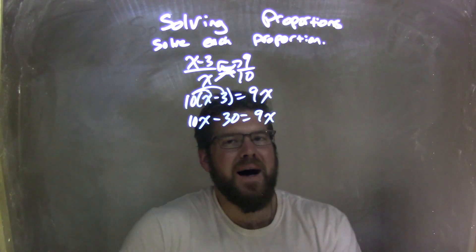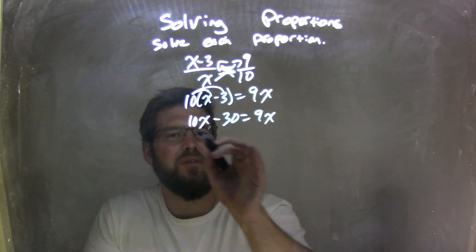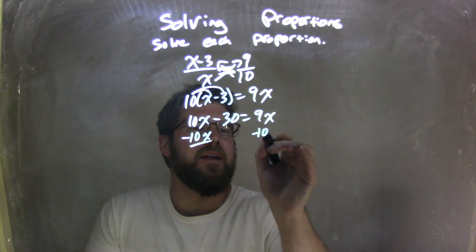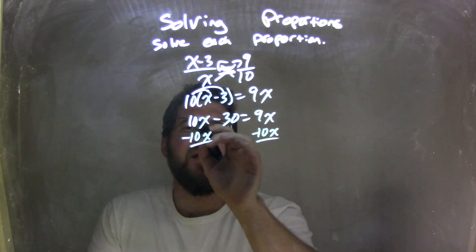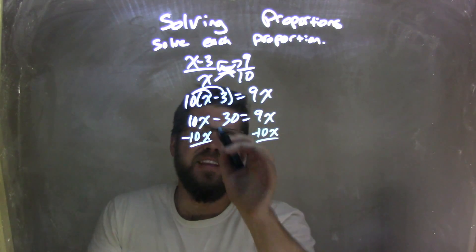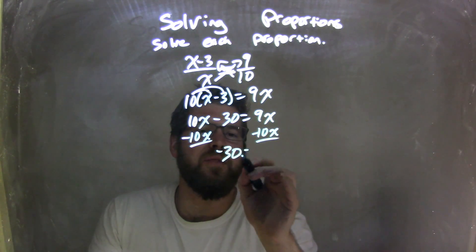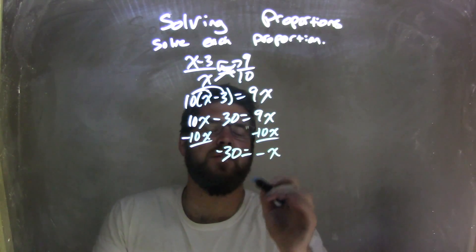Let's combine our like terms. Let's subtract 10x from both sides. Not how I normally do it, but it's all good. So, subtract 10x from both sides, leaving me with negative 30 on the left, and 9x minus 10x being negative x on the right.